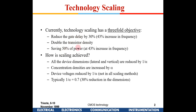We will discuss constant electric field scaling, in which VDD is also reduced so that the electric field remains constant. If the electric field remains constant, the electrostatics governing device operation don't change and there will be no junction breakdowns. When you reduce a device dimension, you reduce VDD proportionately as well.